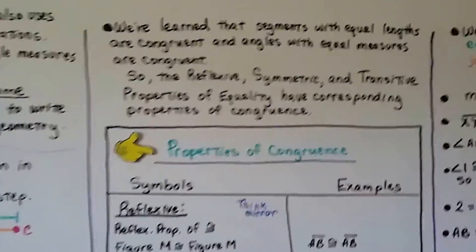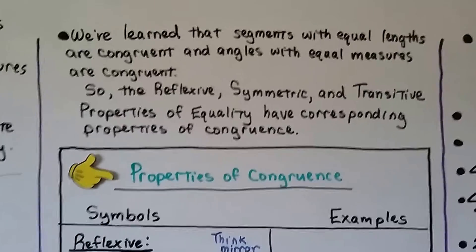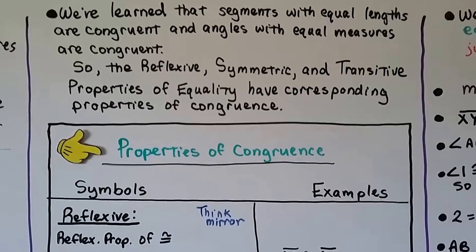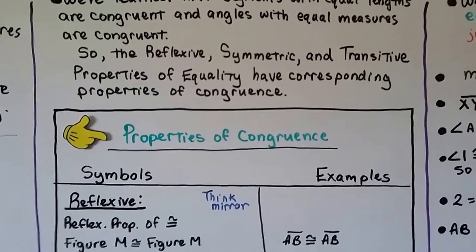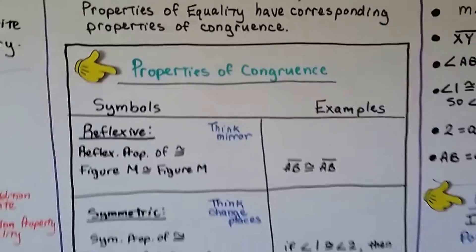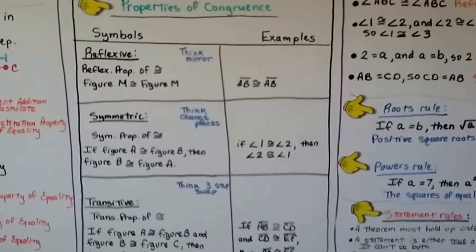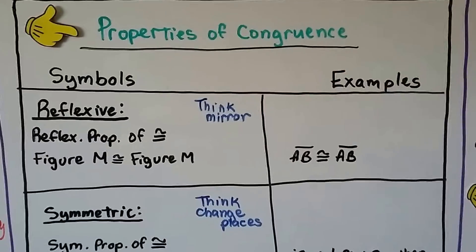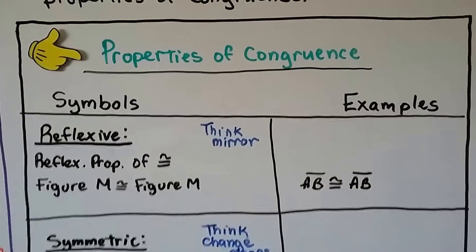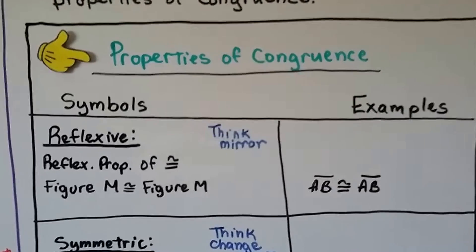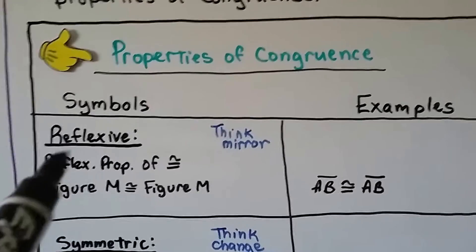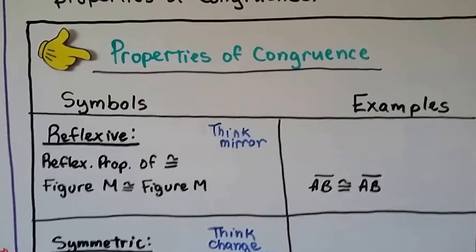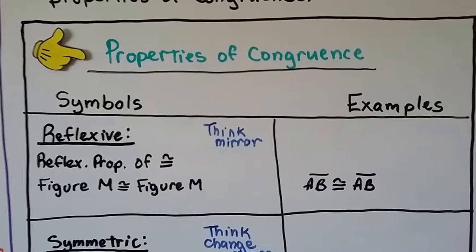Segments with equal lengths are congruent and angles with equal measures are congruent. So the reflexive, symmetric, and transitive properties of equality have corresponding properties of congruence. For the reflexive property of congruence — think mirror — we write: figure M is congruent to figure M. An example in writing would be segment AB is congruent to segment AB.